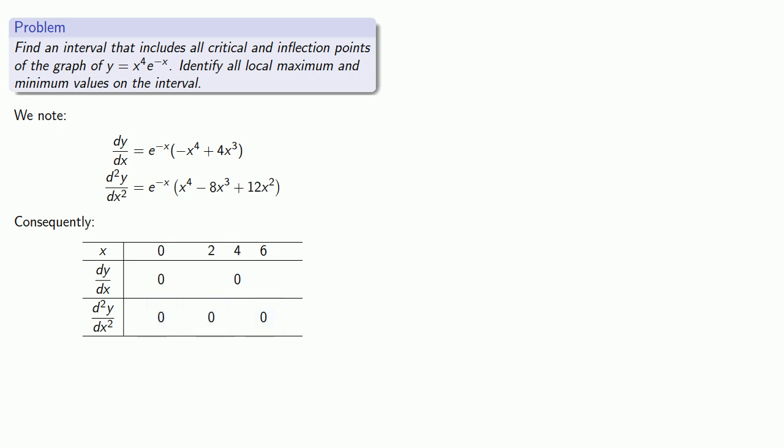So now let's fill in the signs at all the other locations. If x is less than zero, then in the derivative, e to the minus x is positive, and minus x to the fourth plus 4x cubed is negative, so the derivative will be the product of a positive and a negative. It'll be negative. And we'll make a note of that on our sign chart.